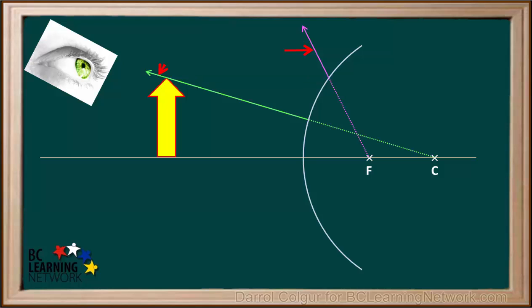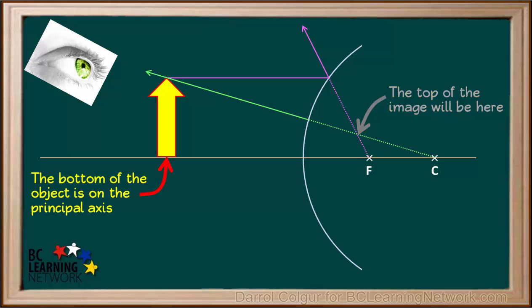When our brain sees rays coming toward us, it assumes they are traveling in a straight line from their source. So these diverging purple and green rays seem to be coming from a source behind the mirror. The rays from the top of the object both seem to be coming from this point, so this will be the top of the image. The bottom of the object is here on the principal axis. So the bottom of the image will be here on the principal axis, directly underneath the top.